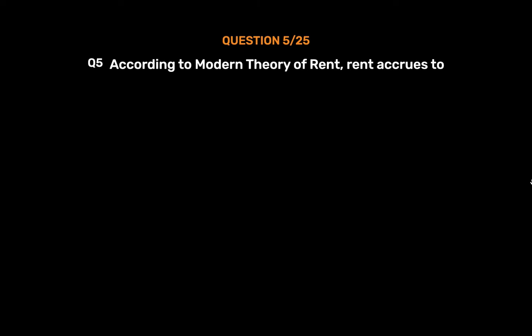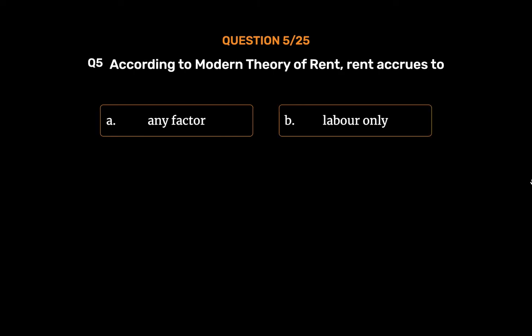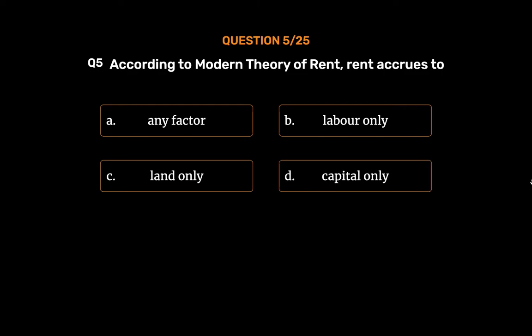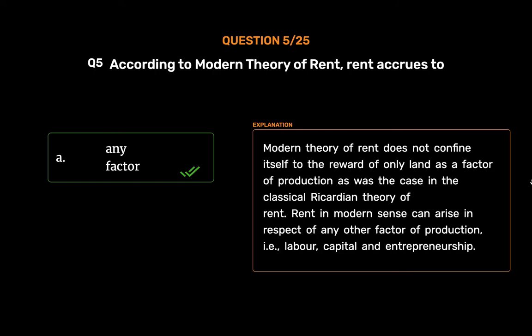Question No. 5: According to the modern theory of rent, rent accrues to — Option A: Any factor, Option B: Labor only, Option C: Land only, Option D: Capital only. The correct answer is Option A, Any factor. The modern theory of rent does not confine itself to the reward of only land as a factor of production, as was the case in the classical Ricardian theory. Rent in the modern sense can arise in respect of any other factor of production, i.e., labor, capital, and entrepreneurship.